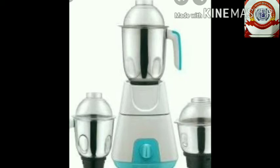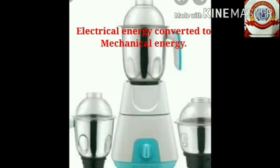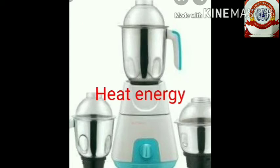Which are the forms of energy produced when a mixer grinder is operated? Electrical energy is converted to mechanical energy — that is, the energy that helps to make machine parts move — and heat energy and sound energy are also produced.